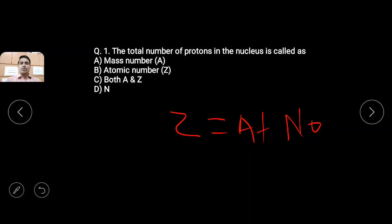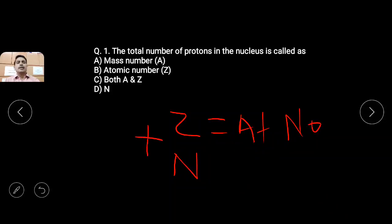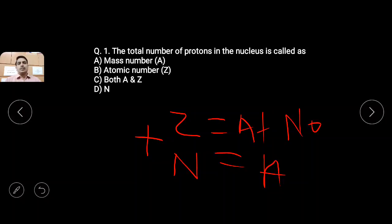The mass number is what you should also know. Capital N is the total number of neutrons in the nucleus of an atom. Z is the total number of protons, and N is the total number of neutrons — together they equal capital A, the mass number. So mass number A equals Z plus N, total number of protons plus total number of neutrons. It is called atomic number Z.